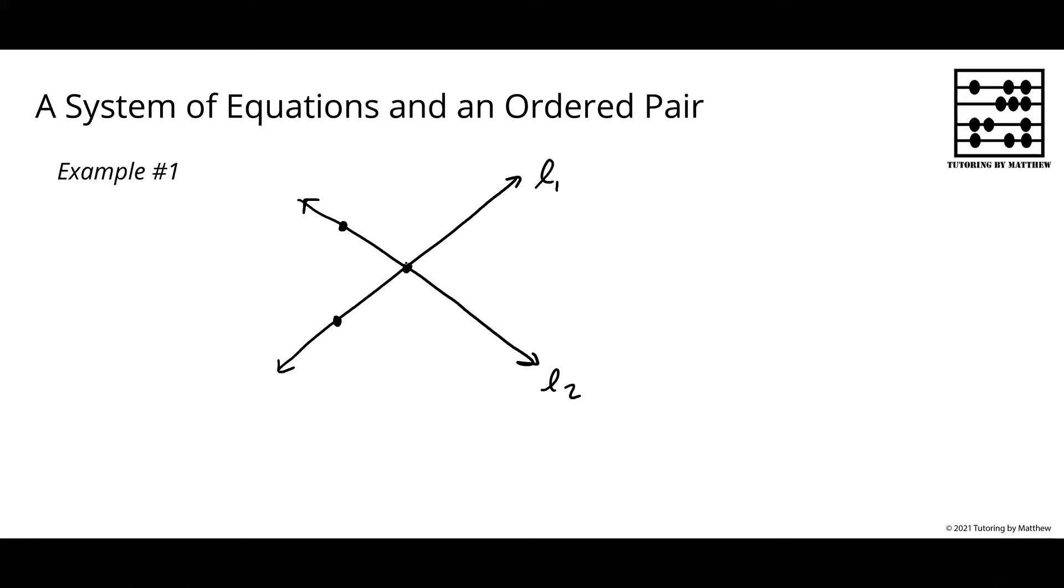Consider a point here at the intersection of the two lines. This is a solution to both equations. That is, it is both on line one and on line two.